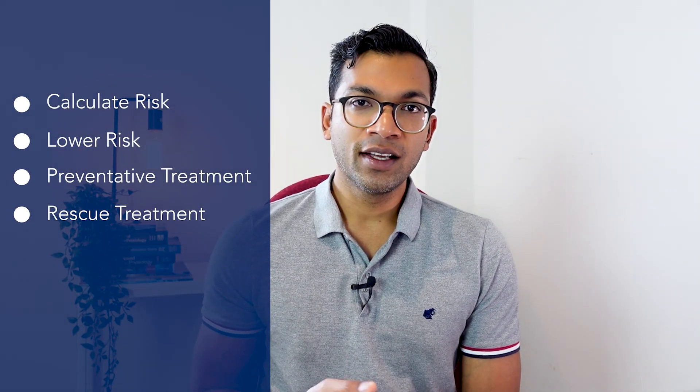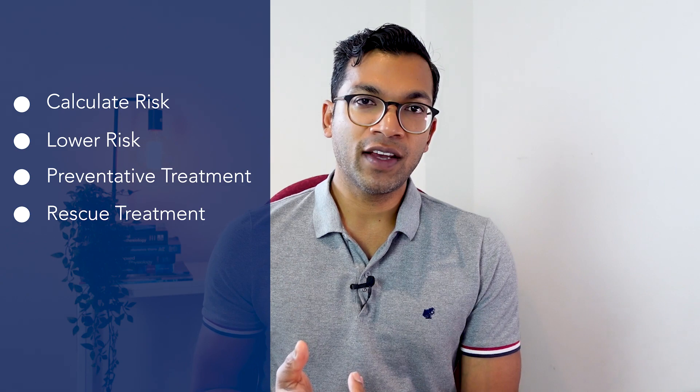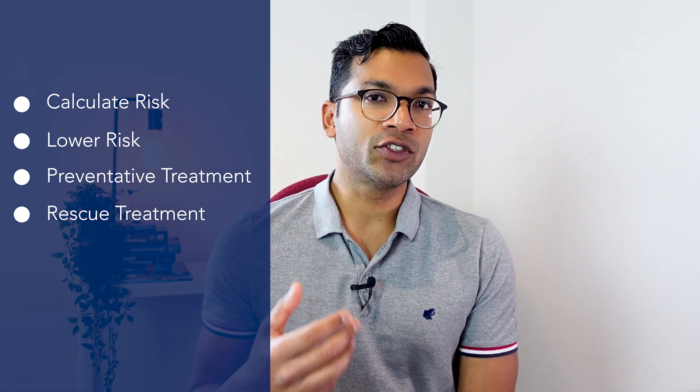So let's get to the crux of the matter. The four-step PONV plan you can implement straight away: calculate the risk, lower the risk, use preventative agents, and then use rescue treatments. Calculate risk, lower risk, preventive treatment, and rescue treatment — that's your four-step plan.